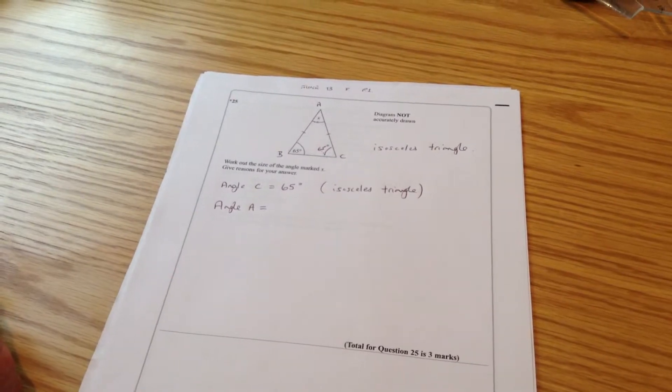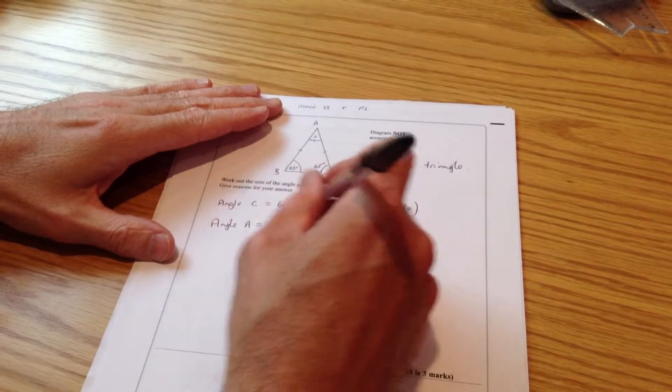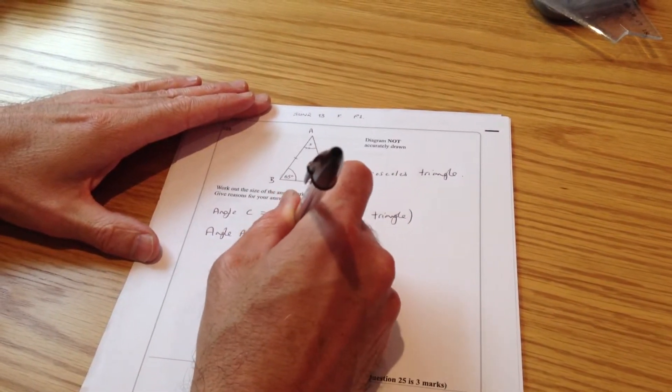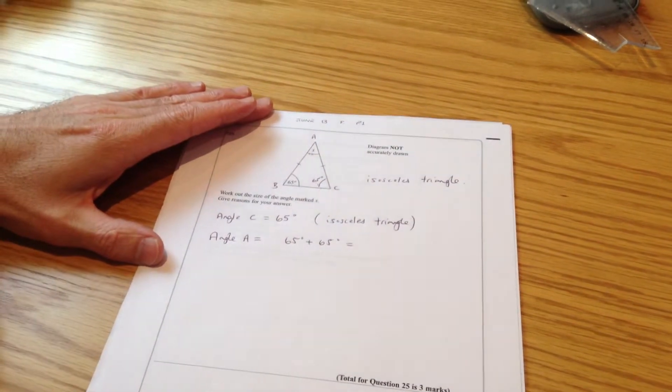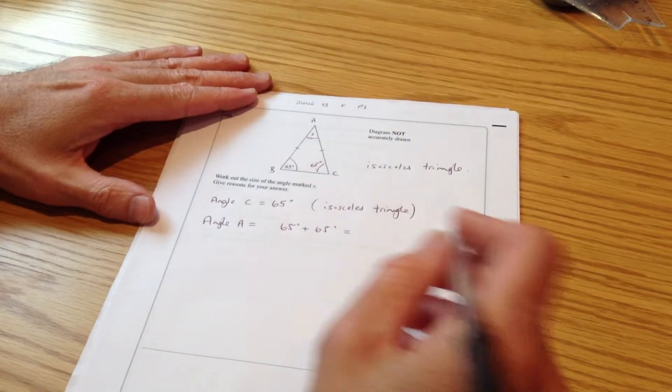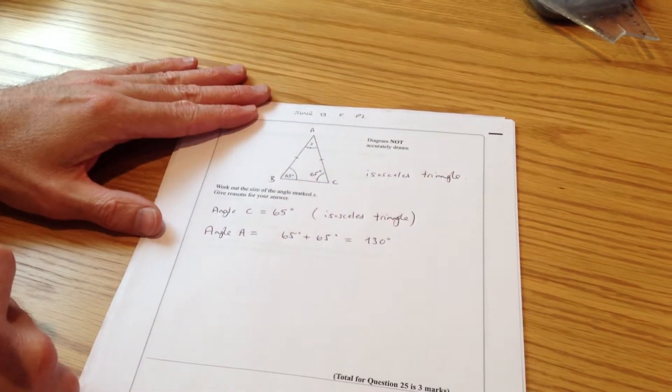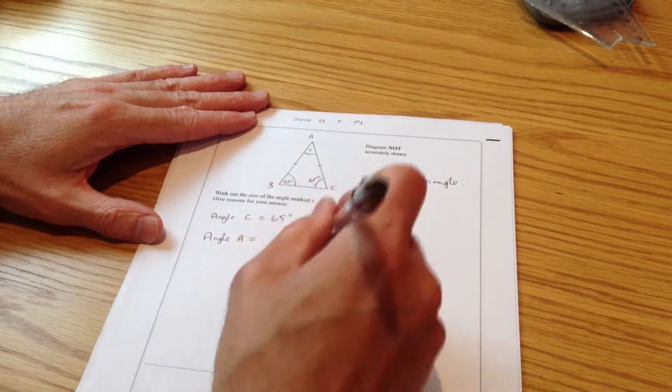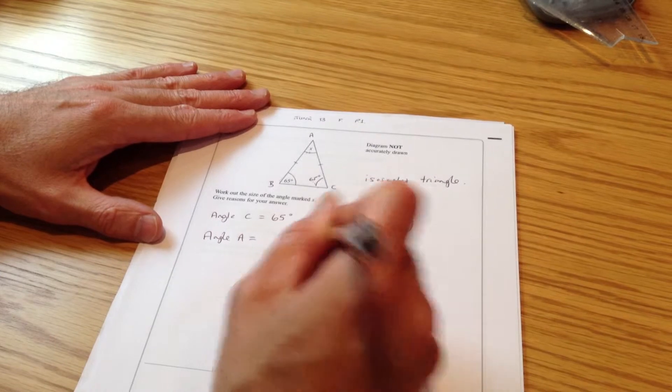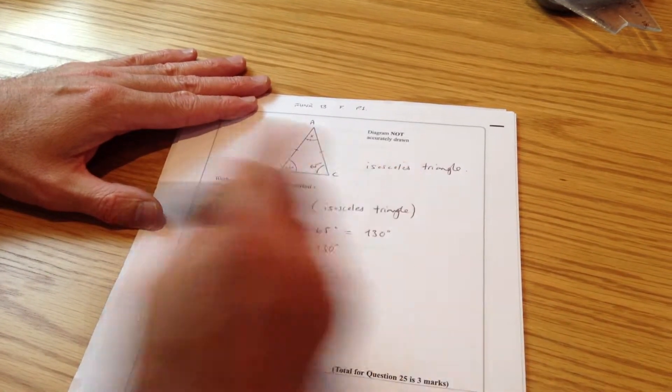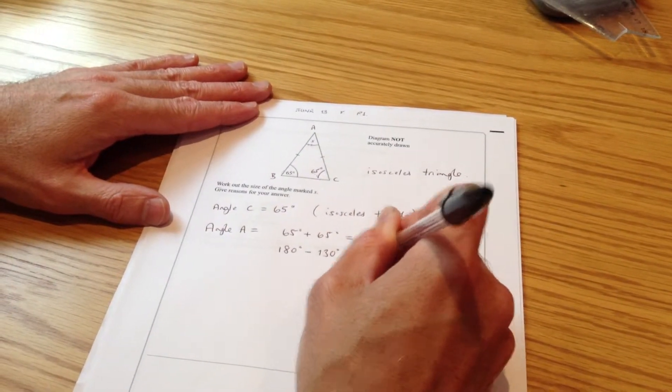Now the two I've got so far, 65 and 65, are those together, and I'm going to get 130 degrees. I know all three angles, so if I take away the 130 from 180, I get 50 degrees.